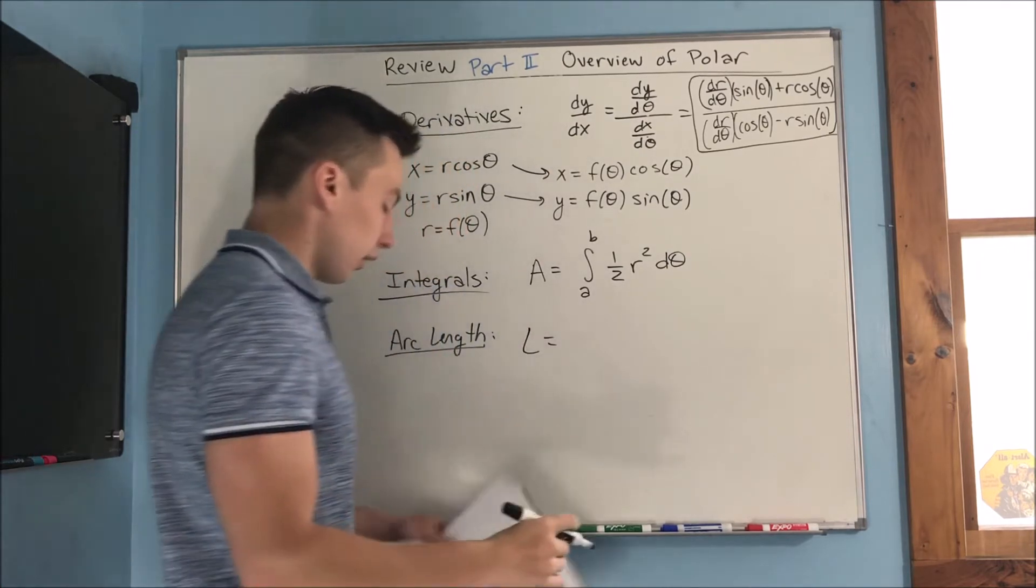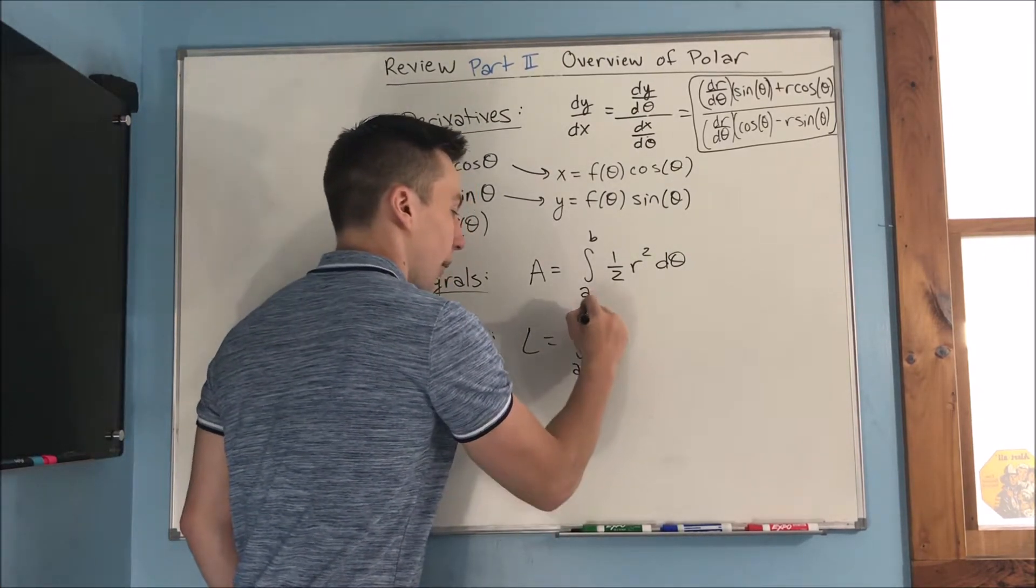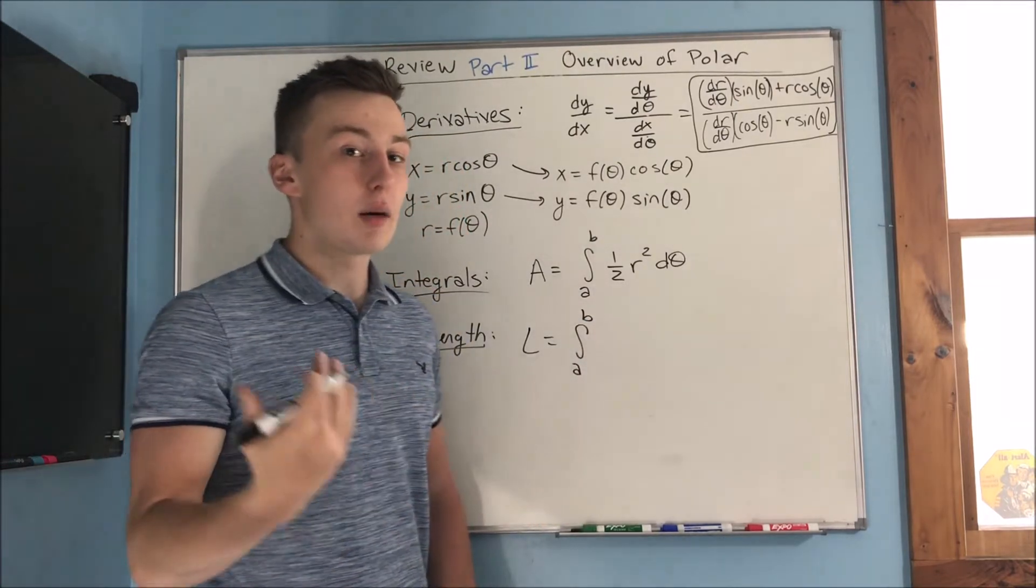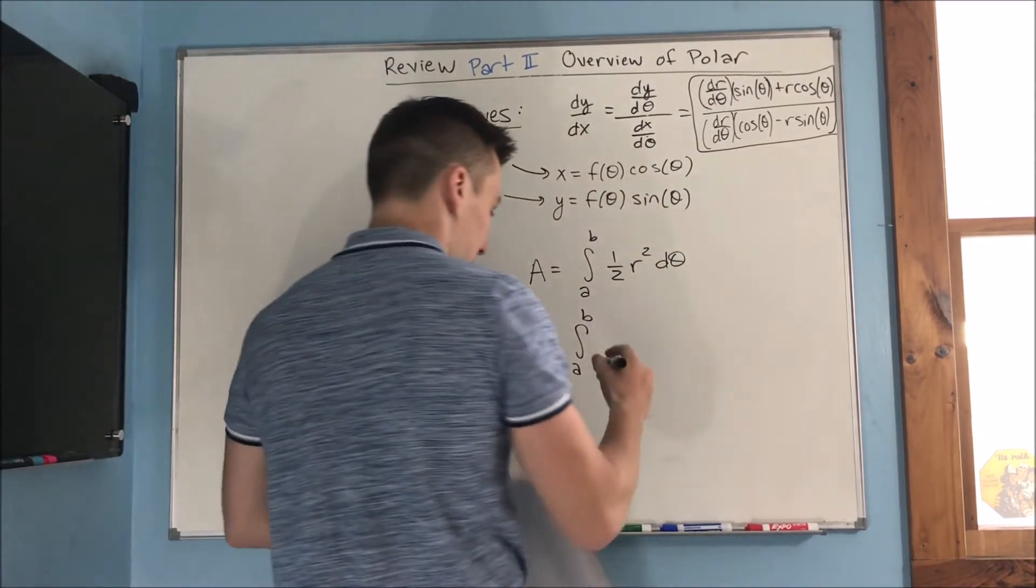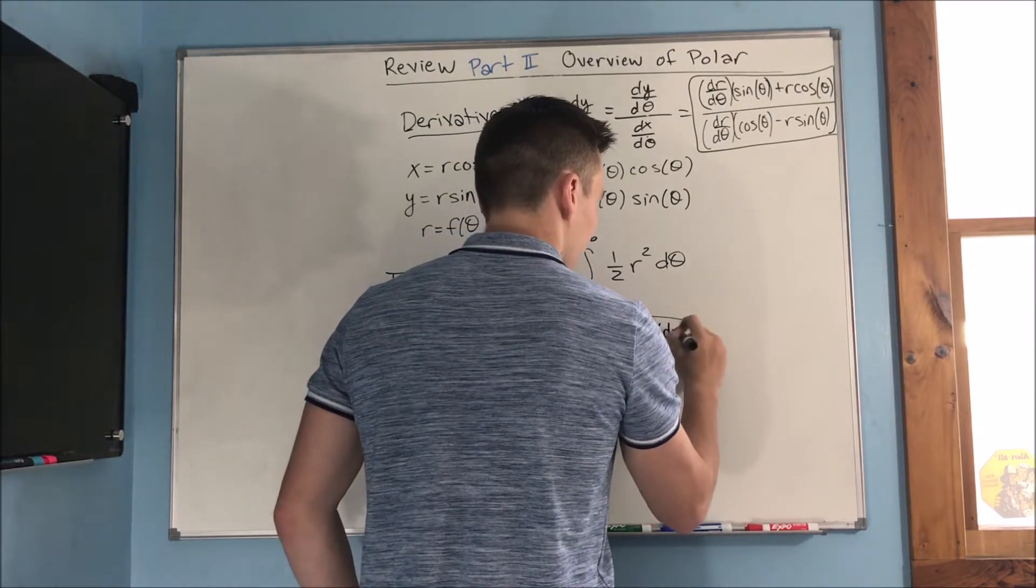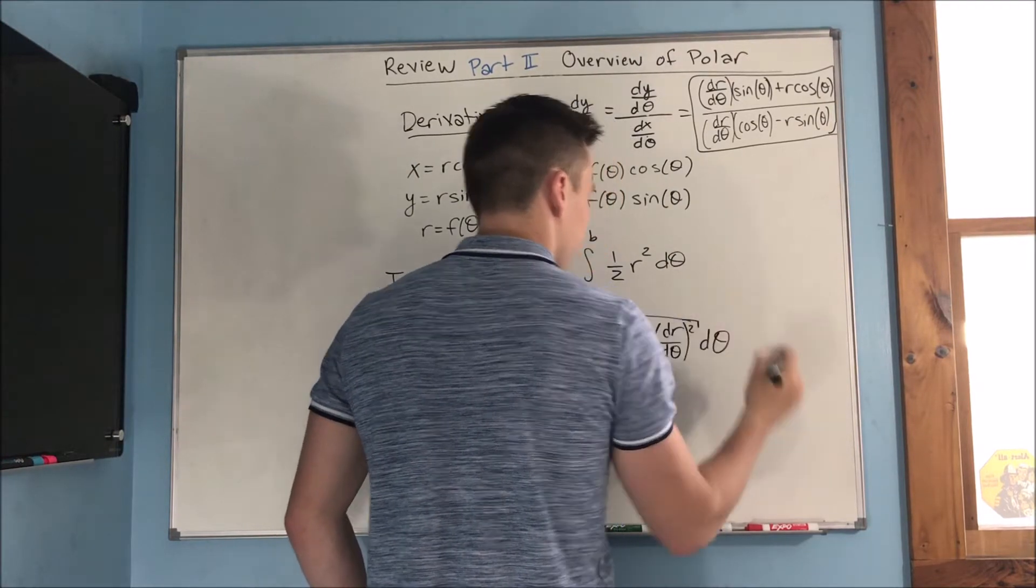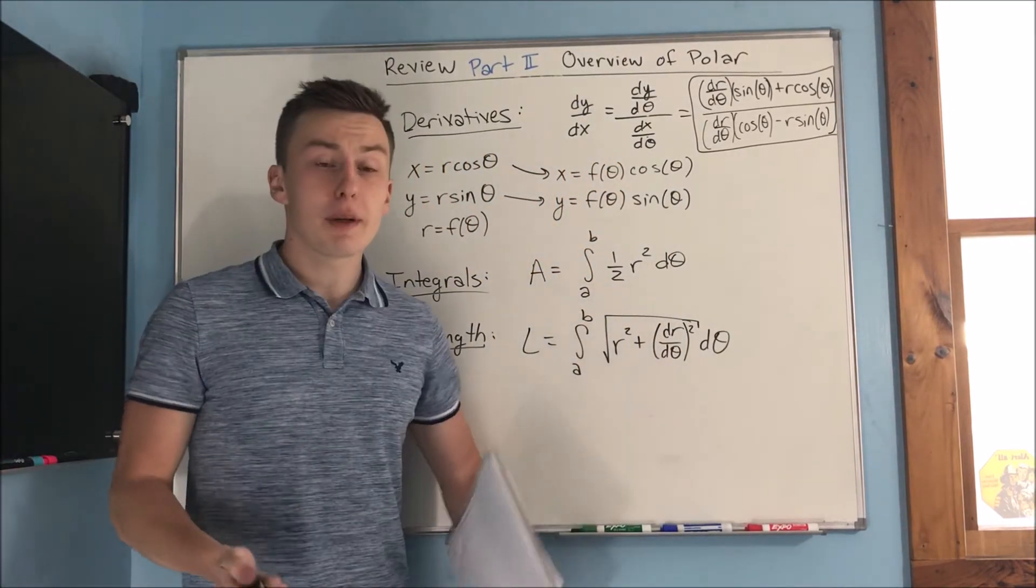For arc length, we know that the arc length equation, this is just plugging in what we know about polar into that parametric arc length equation. So, we end up getting the square root of R squared plus dR/dθ squared dθ. So, that's pretty much all of it.